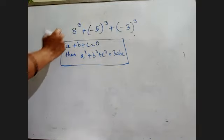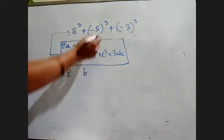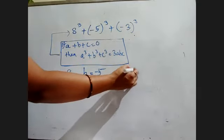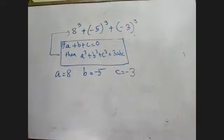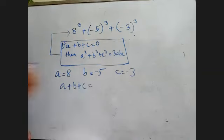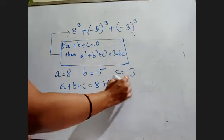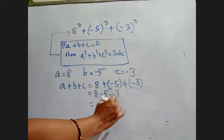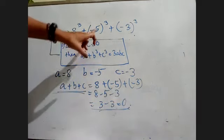If a + b + c is equal to 0, then a³ + b³ + c³ is equal to 3abc. We need to check that this condition is applied or not. First of all, we need to verify: a is equal to 8, b is -5, c is -3. Now, quickly tell me, a + b + c is equal to how much? 8 + (-5) + (-3) = 8 - 5 - 3 = 0. So now it is proved that a + b + c is equal to 0 in this case.